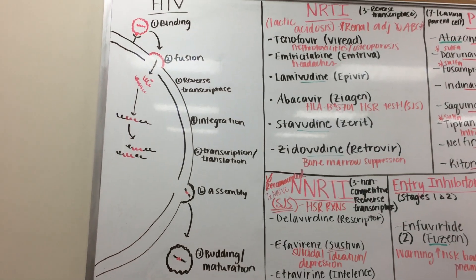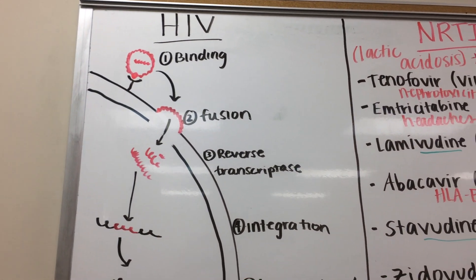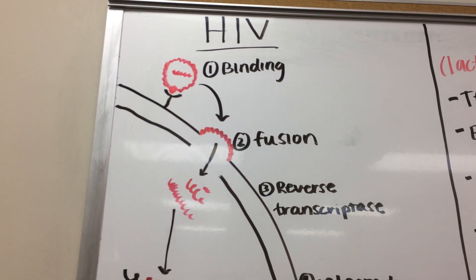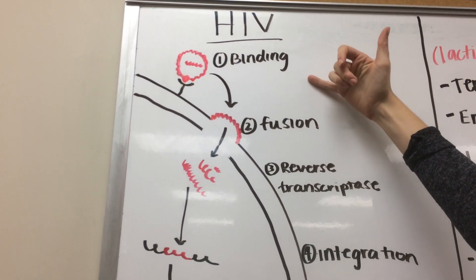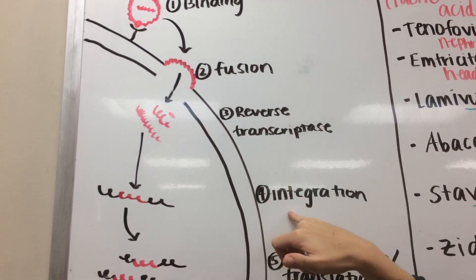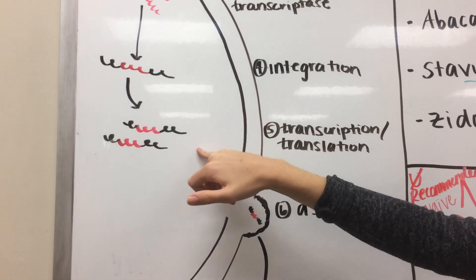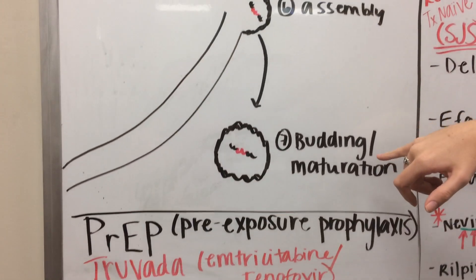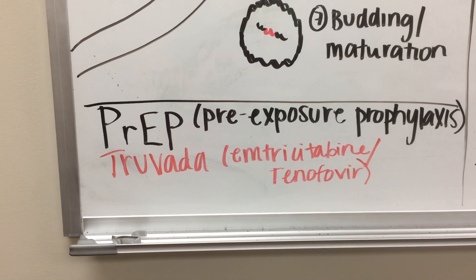Today we're going to be going over HIV, breaking it down into a more visual aspect. I drew out the different steps that the HIV virus goes through in its replication process. The red represents the actual HIV virus, and the large cell represents the CD4 cell. We have: binding, fusion, reverse transcriptase, integration, transcription or translation, assembly forming into a new CD4 cell, and then budding and maturation where it cleaves itself and goes into systemic circulation.